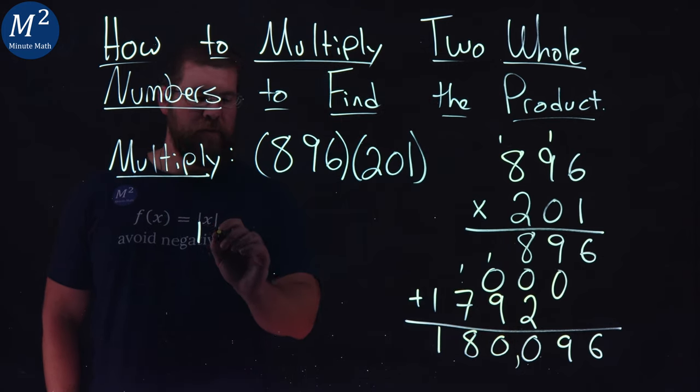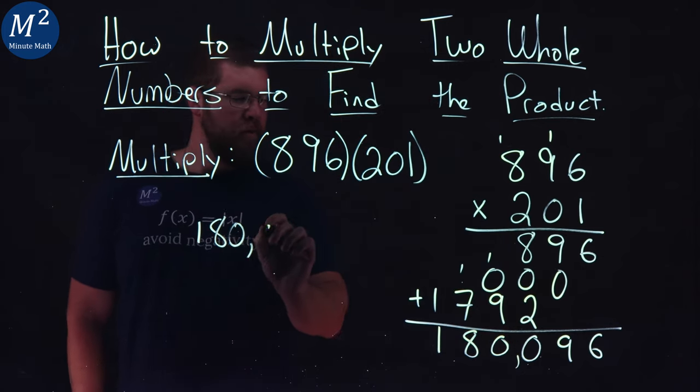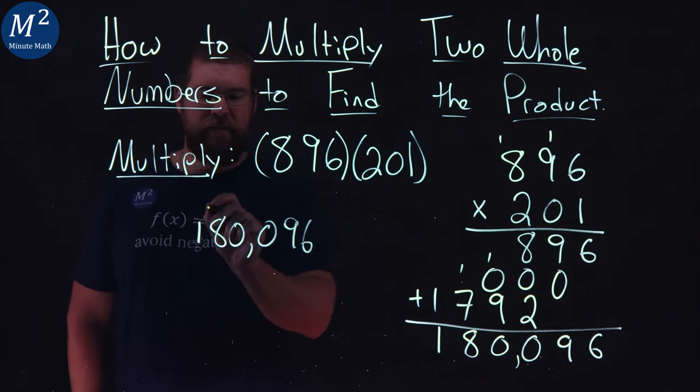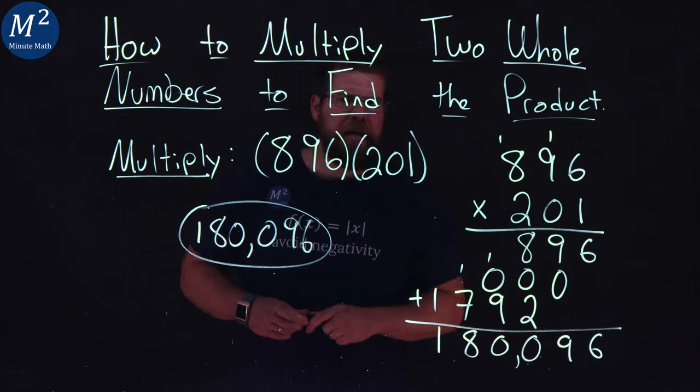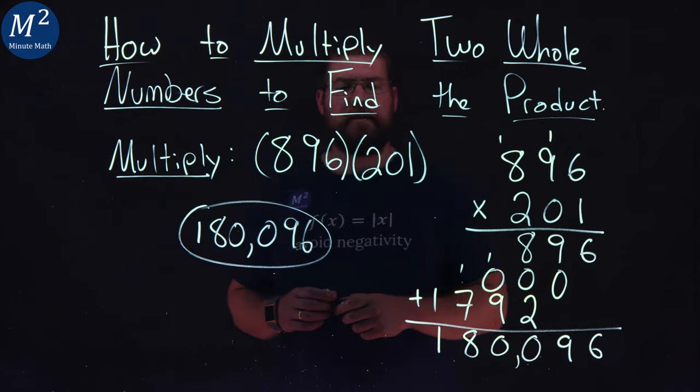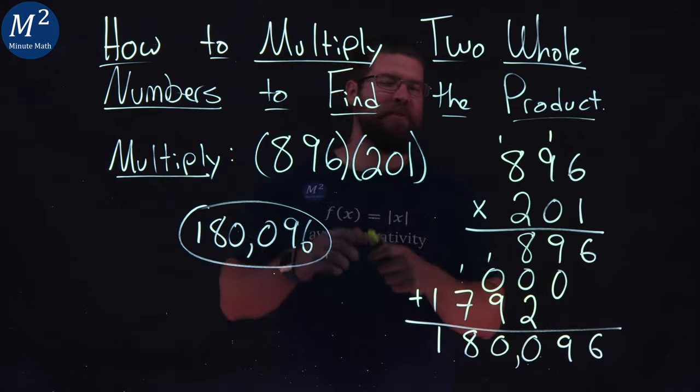So, if I want to rewrite this out, make it a little easier. 1, 8, 0, 0, 9, 6. So, 180,096 is the answer when you multiply 896 times 201.